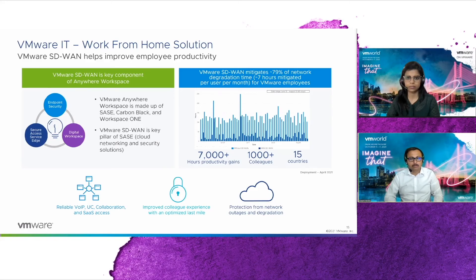We were successfully able to do so using VMware SD-WAN. We have seen VMware SD-WAN mitigate 79% of network degradation at our colleagues' homes, which resulted in savings of over 7,000 hours per month — those were the productivity gains we saw. Currently, we have rolled out SD-WAN to more than 1,000 VMware employees, and today we use Edge Network Intelligence with the Zoom integration. Our goal is to deploy the Edge Network Intelligence client across our VMware colleagues' desktops and continue to increase adoption.